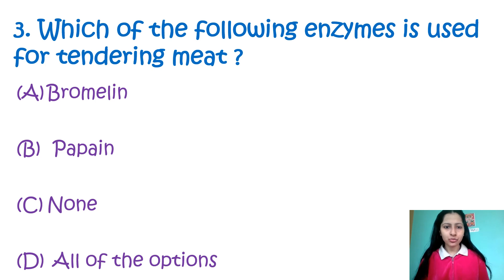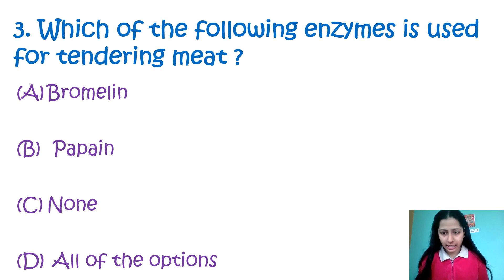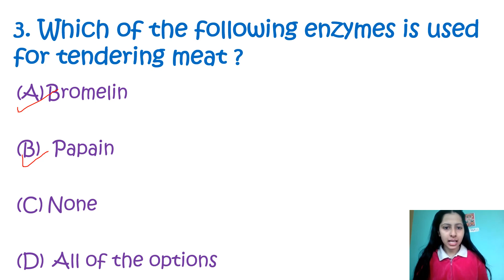Question 3: Which of the following enzymes is used for tenderizing meat? Option A: bromelain, B: papain, C: none, D: all of the options. Tenderization of meat means reducing the amount of detectable connective tissues in the meat. Both bromelain and papain are used — bromelain is found in pineapple and papain is found in papaya. So the correct answer is option D, all of the options.